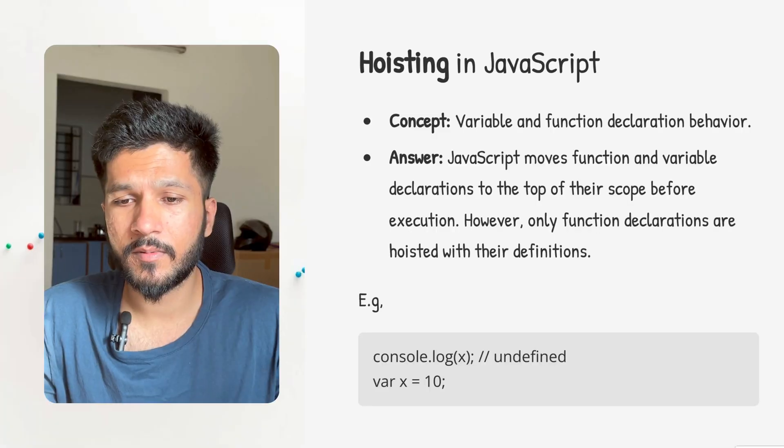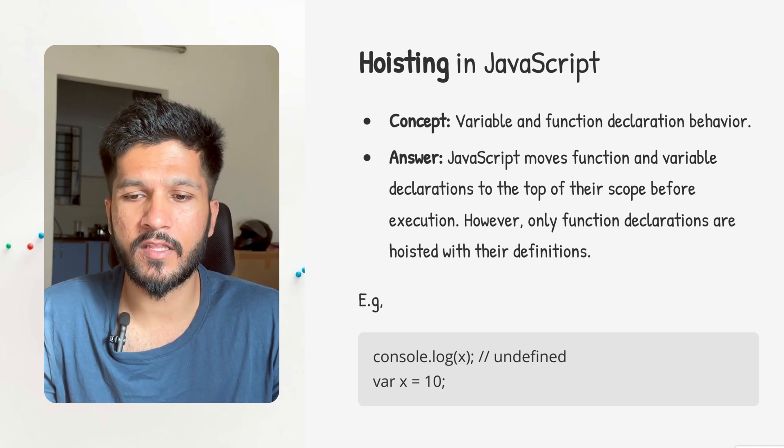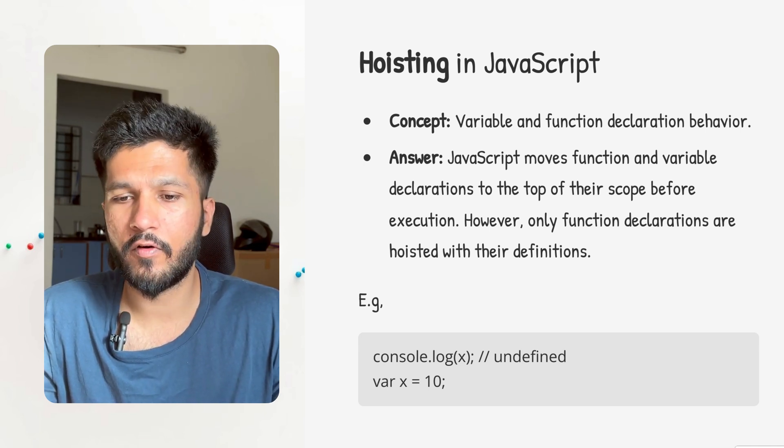Now let's move on to the last question: hoisting in JavaScript. Hoisting is a concept for variable and function declaration behavior — JavaScript moves functions and variables to the top of their scope before execution. JavaScript has two major phases: compilation phase and execution phase. During the compilation phase, the compiler scans everything and allocates memory to all variables and functions. Only function declarations are hoisted with their definitions, but variables are given placeholders.